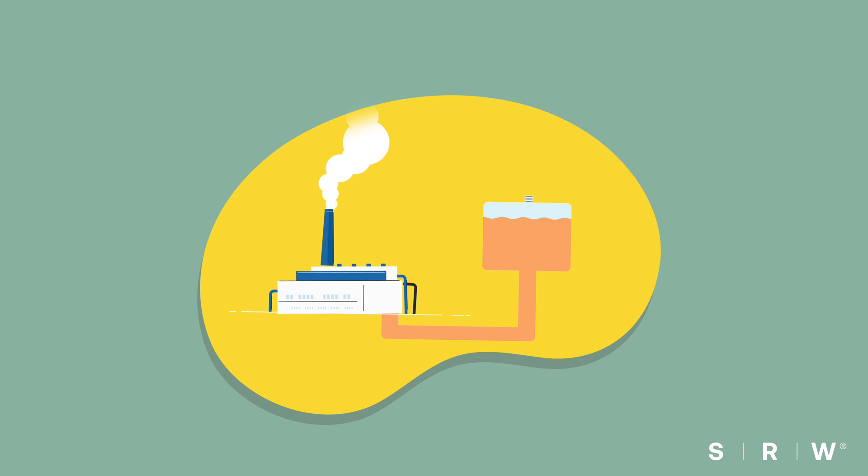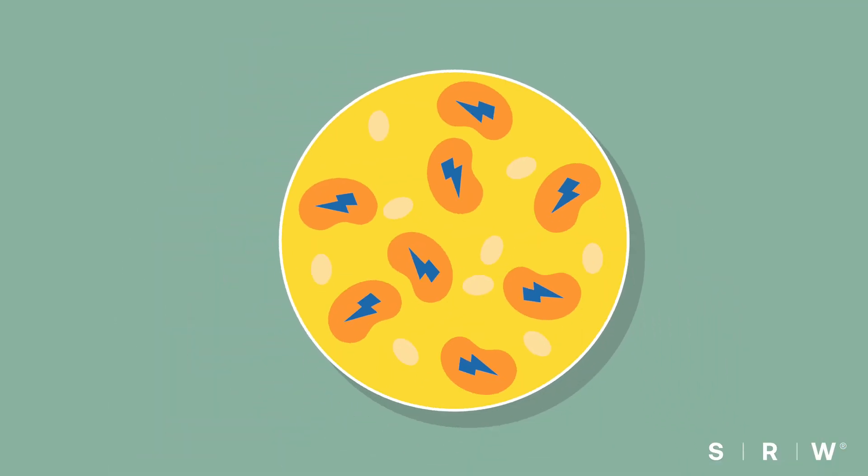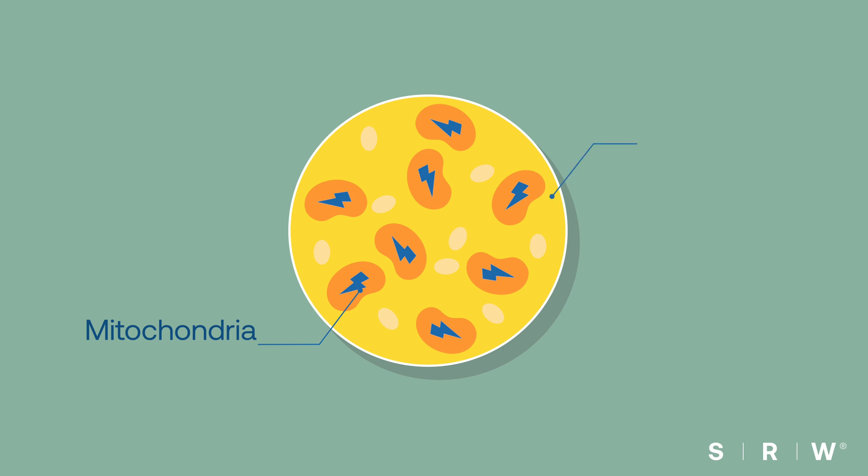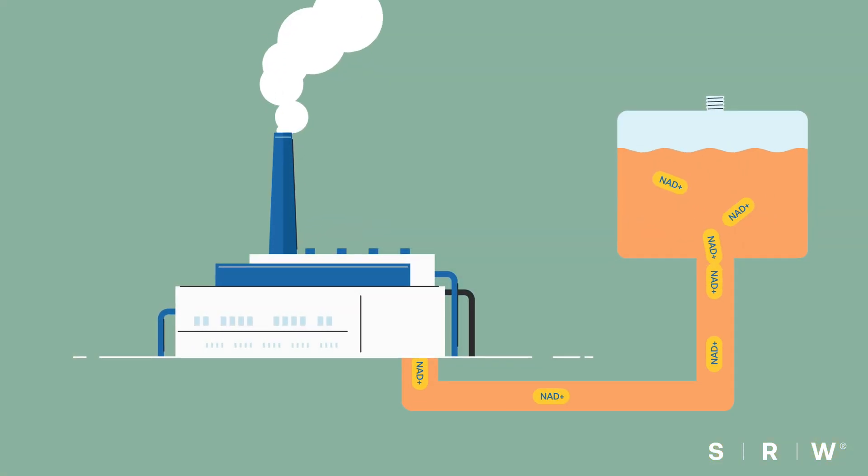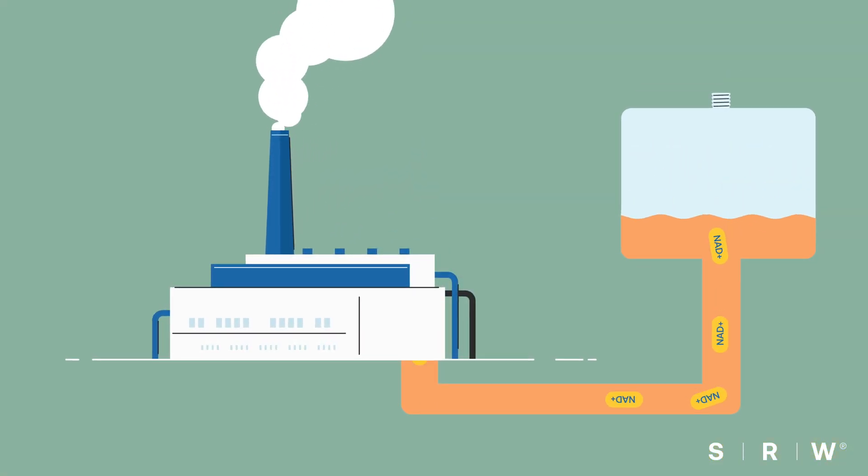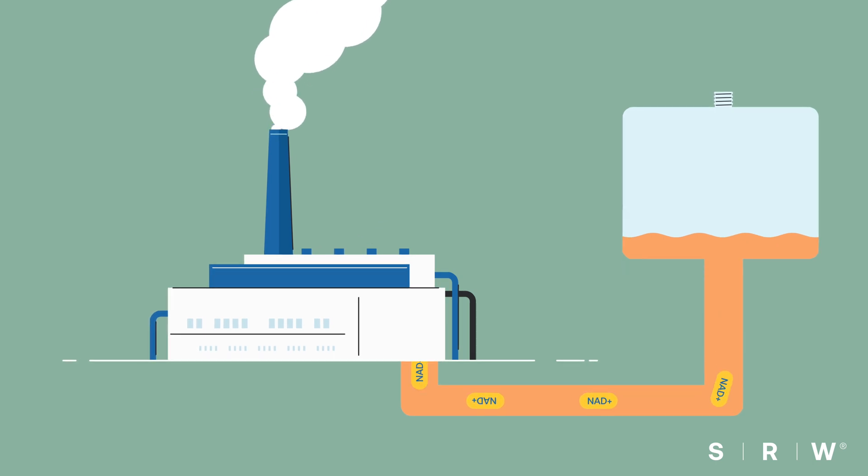Mitochondria are the power stations, or batteries, of your cells. NAD Plus also plays an important role in supporting the function of stem cells, which are the source of specialized cells in the body. NAD Plus levels decrease with age, which is why many notice a difference in vitality as we get older.